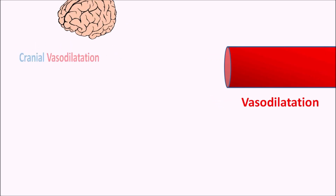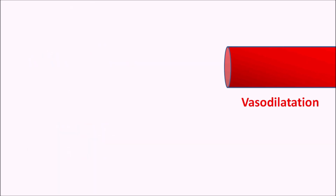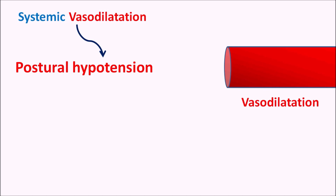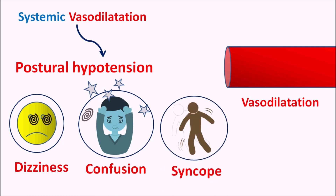Alpha blockers can produce cranial vasodilation, resulting in increased headache as well as some dizziness in patients. They can produce systemic vasodilation, which reduces blood pressure resulting in postural hypotension — also called orthostatic hypotension — where blood pressure is not maintained with a change in posture, resulting in symptoms such as dizziness, confusion, and syncope or fainting sensation in patients.